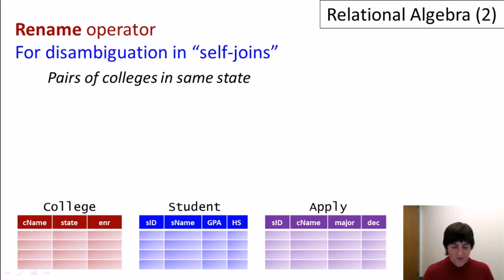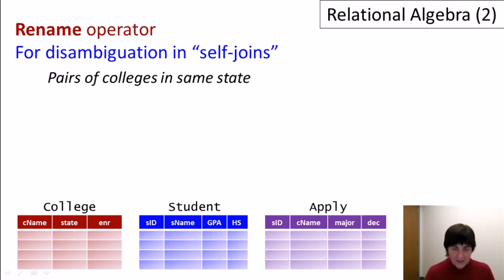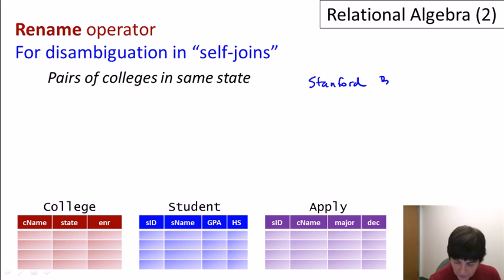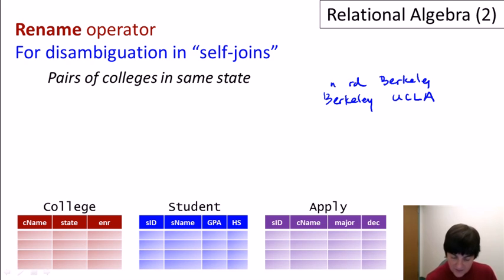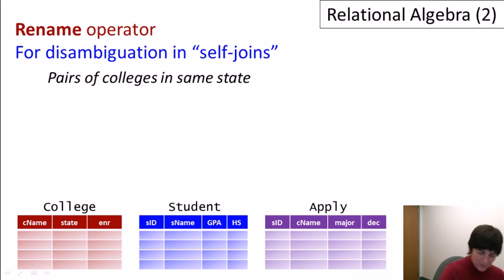The second use of the rename operator is disambiguation in self-joins, which is quite a bit more important. Suppose we want a query that finds pairs of colleges in the same state — for example, Stanford and Berkeley, or Berkeley and UCLA. Unlike the union operator, we're looking for horizontal joining, so we need to combine essentially two instances of the college relation. We're effectively going to do college join college, making the state equal.